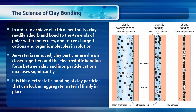The process of clay bonding is further illustrated in the diagram to the right. Clay particles are represented by the pinky beige plates. In order to achieve electrical neutrality, clays draw in, readily adsorb, and bond to the positive ends of polar water molecules and to the positively charged cations and organic molecules in solution. This creates a weakly bonded plastic material. As water is removed, clay particles are drawn closer together and the electrostatic bonding force between clay and interparticle cations increases significantly, reaching a maximum when most water is removed. It is this electrostatic bonding of clay particles that can lock aggregate material firmly in place.